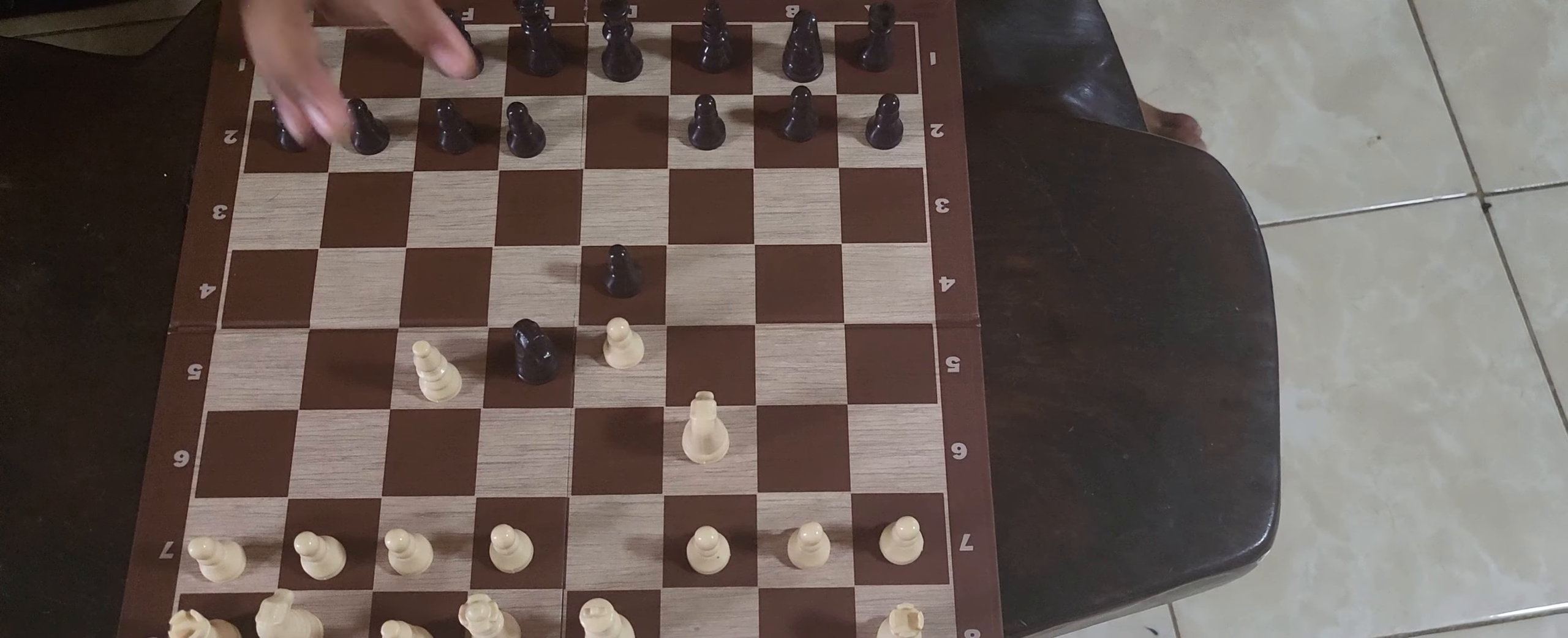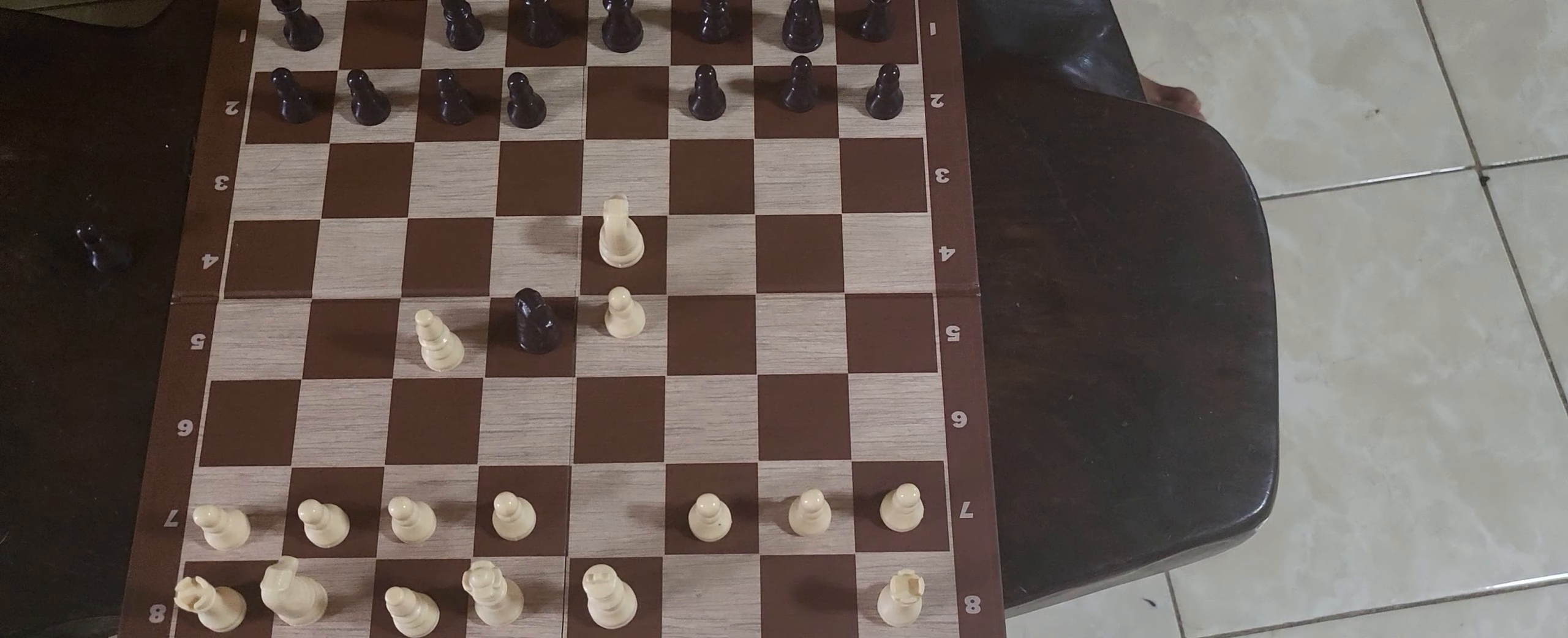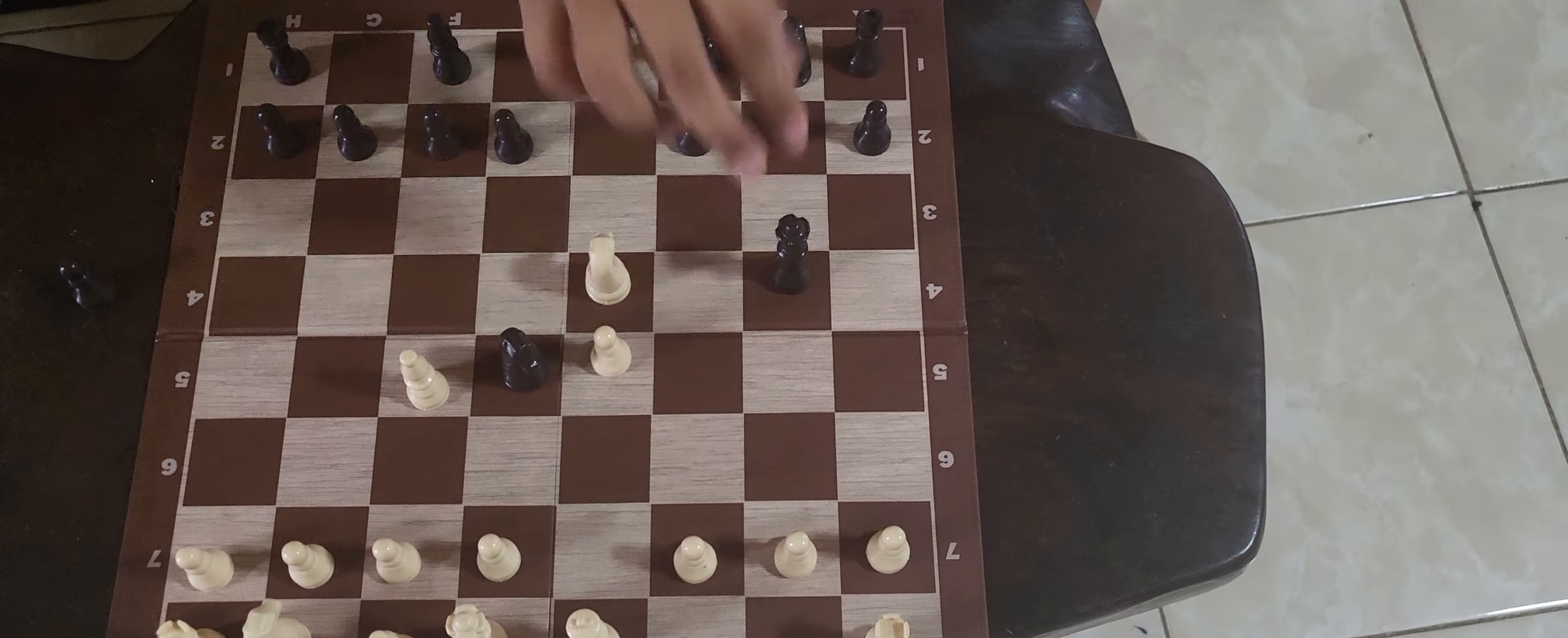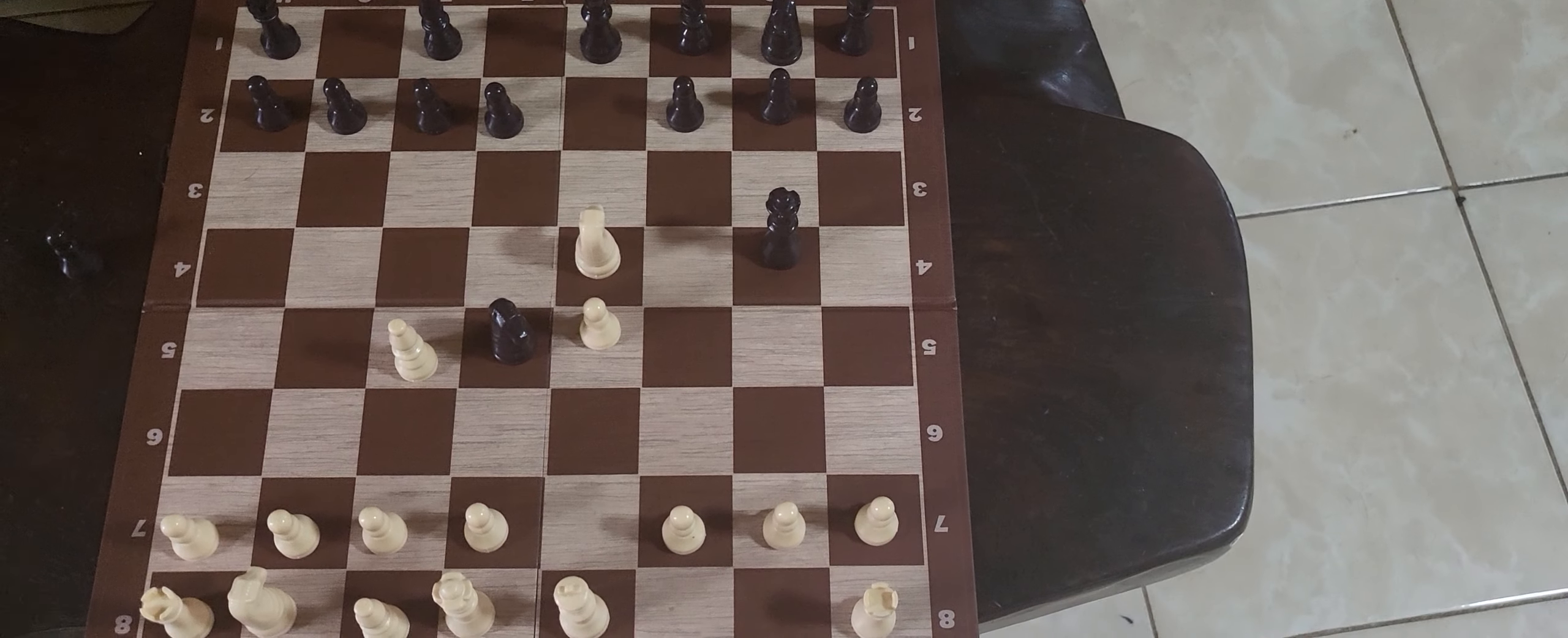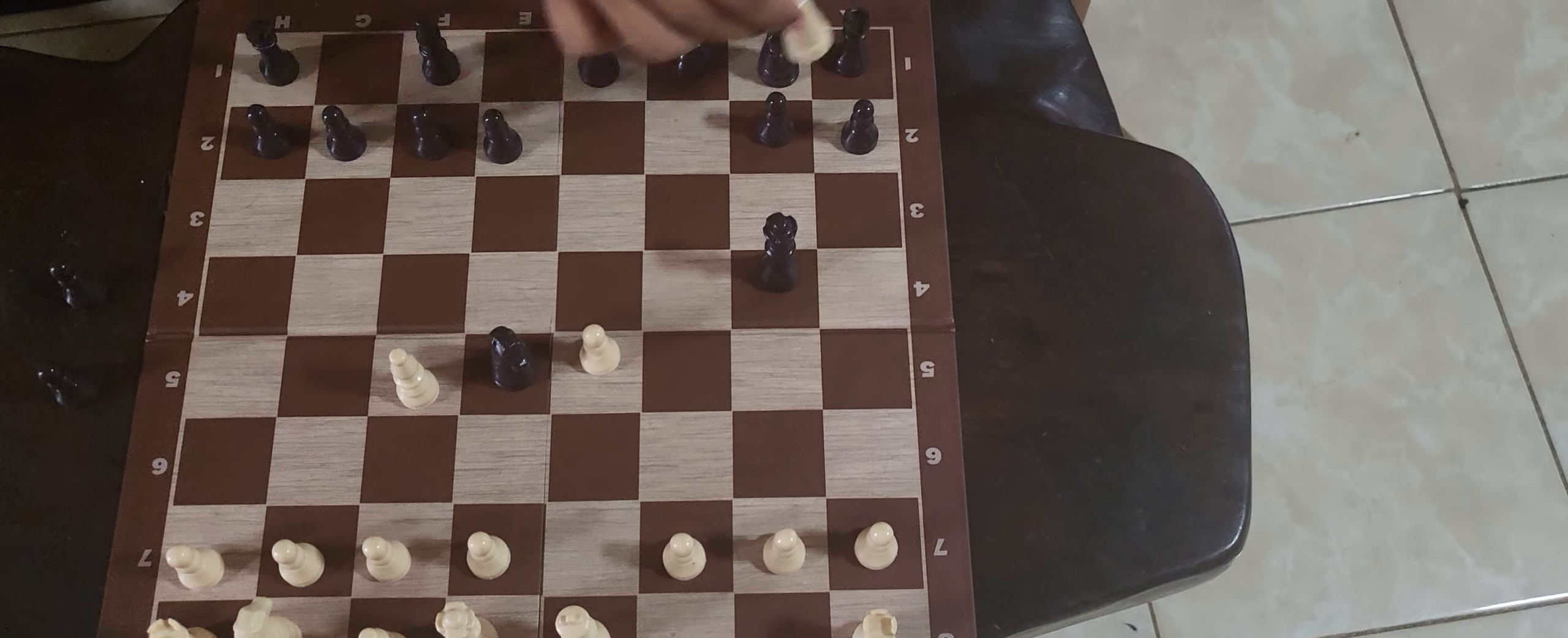Then they will kill your pawn on d4. Then you will move your queen out to b4. Then they will kill your pawn on c2. Then it's a fork.